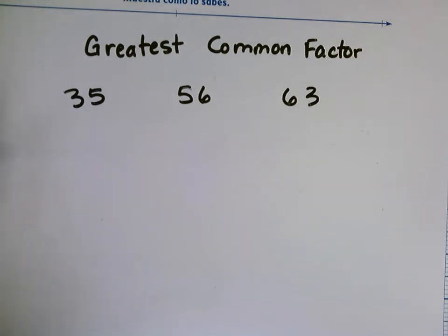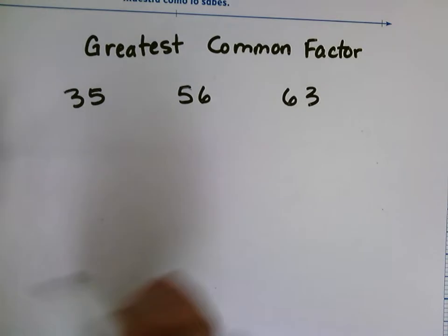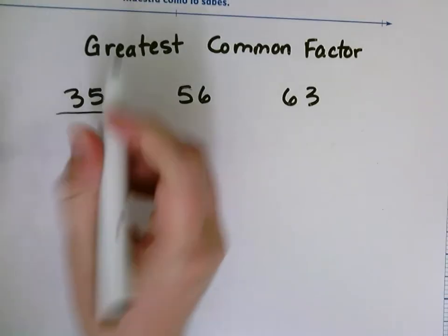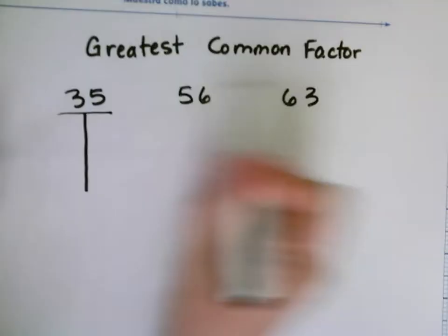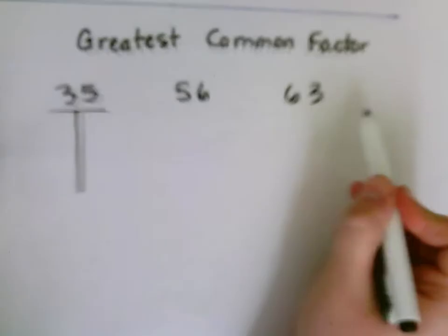Today we're going to learn how to find the greatest common factor of three numbers. I'm going to do this with a t-chart instead of a list. So I'm going to make a factor t-chart for 35, and then I'm going to find the greatest common factor of 35, 56, and 63.